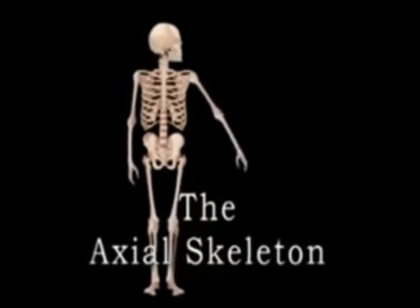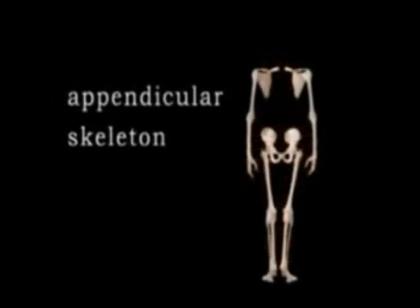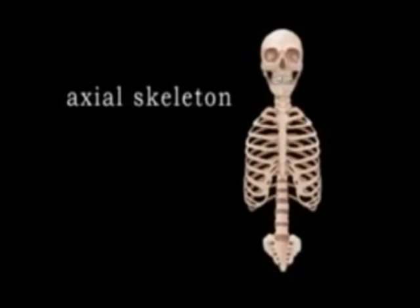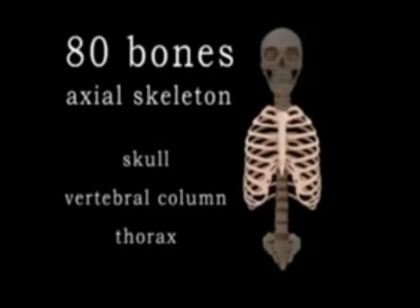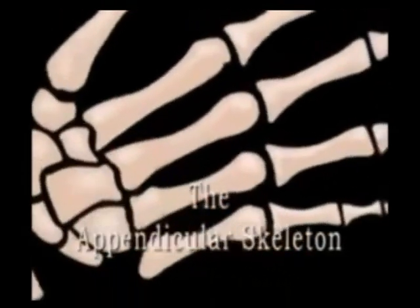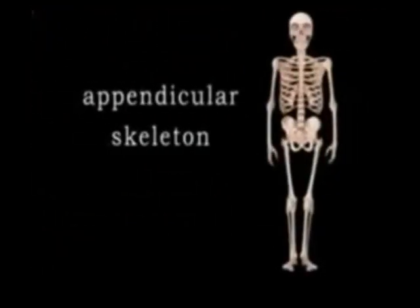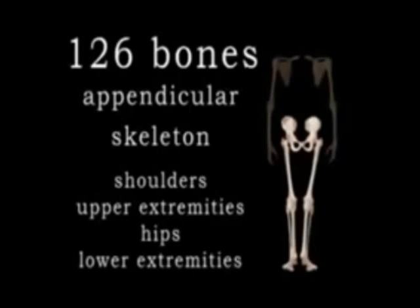The skeletal system is divided into two: the axial skeleton, which contains the longitudinal axis of the body, and the appendicular skeleton, which consists of bones appended to the axial skeleton. The axial skeleton includes 80 bones comprising the skull, vertebral column and the thorax. The appendicular skeleton consists of 126 bones: bones of the shoulder, upper extremities, hips and lower extremities.